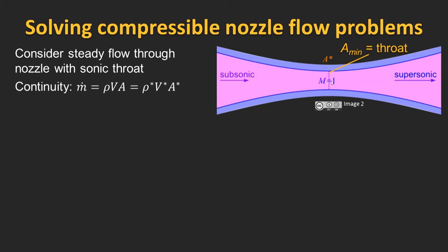To do this, we start with the continuity equation, which relates the mass flow rate at any point, ρvA, to the mass flow rate at the throat, which is given by ρ* A* v*. Dividing through by ρv times A*, we find that A/A* is equal to ρ*/ρ times v*/v, which we label equation 1.